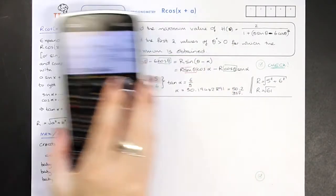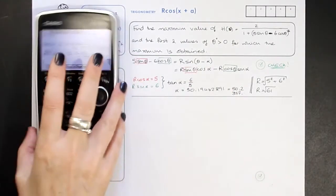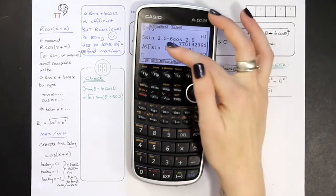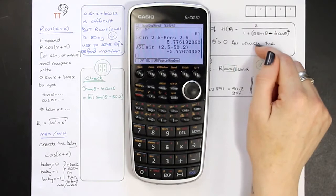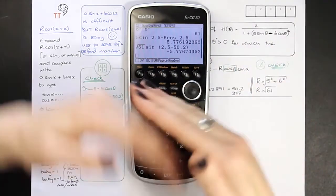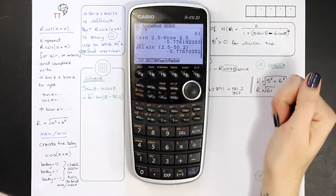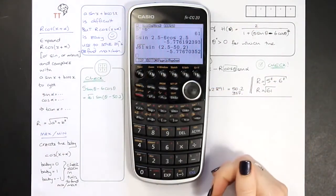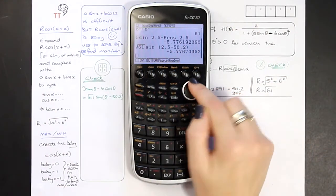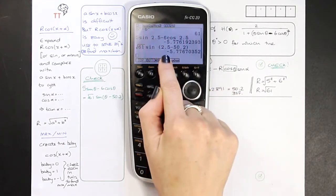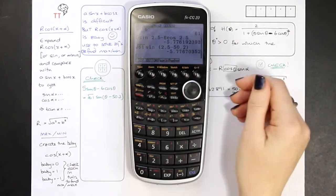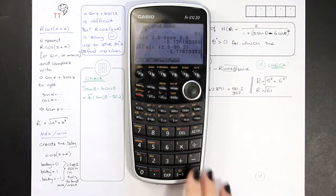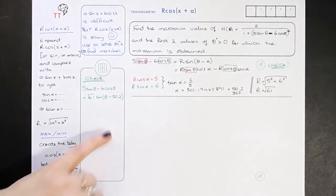They're not exactly the same for two reasons: one, I used 50.2 instead of the full decimal; and the other reason is that I used 2.5 degrees, which is very small — 2.5 degrees is pretty tiny. It might have been better to choose 30° or 42° or something like that. But anyway, I'm convinced by that that they're the same and that I'm correct so far.